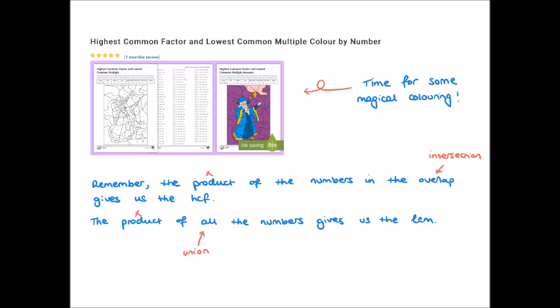Now it's your turn to practice these skills. You're looking for a resource called 'Highest Common Factor and Lowest Common Multiple Colour by Number.' You'll calculate HCF and LCM of various pairs of numbers. On some occasions you'll be able to use observation or the listing technique, whereas with some questions you'll need to use the Venn diagram method. Spend as long as you want on this and enjoy yourself. Welcome back — hopefully that colouring has given you some time to consolidate each technique. The reason these processes are really useful is that they can help us to solve contextual questions.